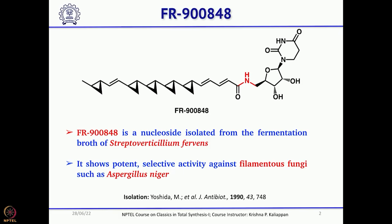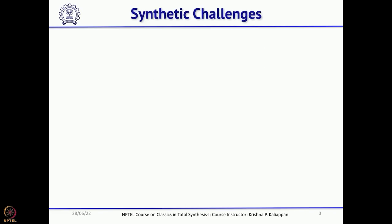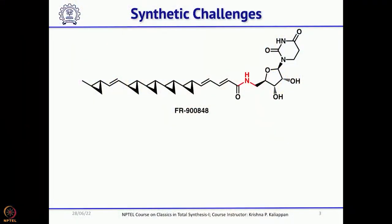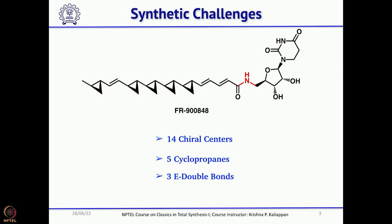Because of this structural complexity and biological activity, many synthetic groups were interested in total synthesis of this natural product. Five years later, the first total synthesis was reported by Tony Barrett. The major challenges posed by this molecule are: there are 14 chiral centers — four from the sugar unit can be obtained from commercially available starting materials, but the remaining ones are not easy to make. There are also five cyclopropanes and three E double bonds.